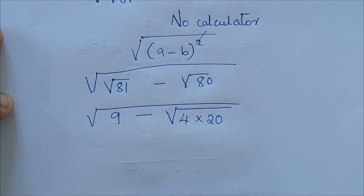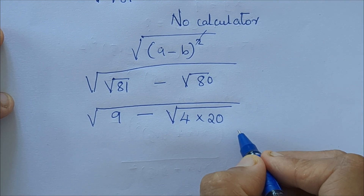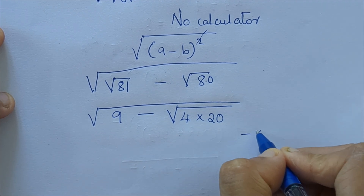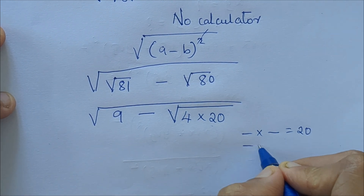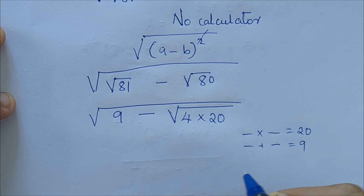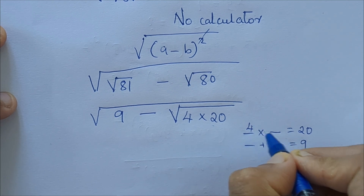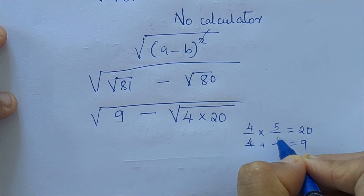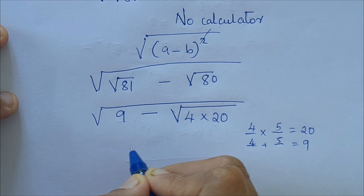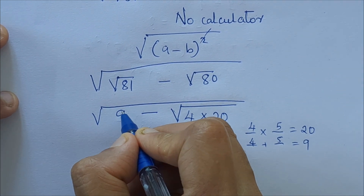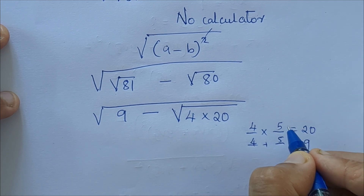Now we have to find two numbers such that when we multiply them we get 20, and when we add them we get 9. Those numbers are 4 and 5 — because 4 times 5 is 20 and 4 plus 5 is 9. So we can break 9 as 4 plus 5 and factorize 20 as 4 times 5.